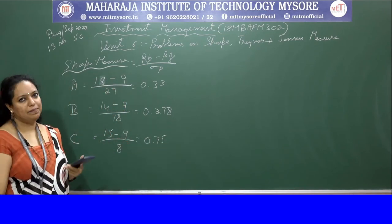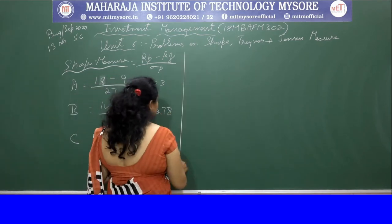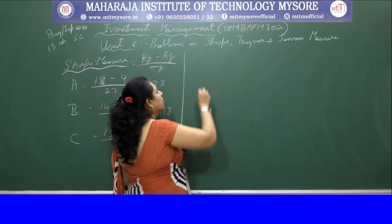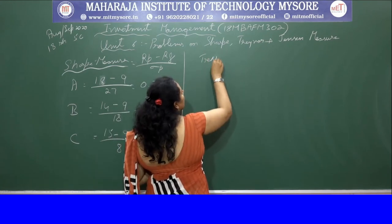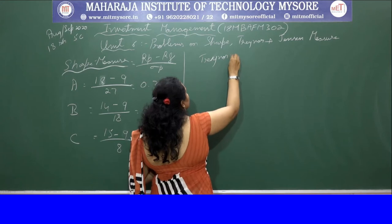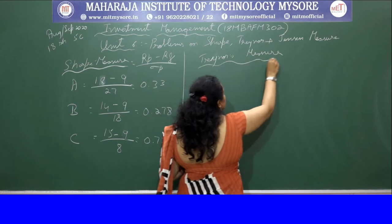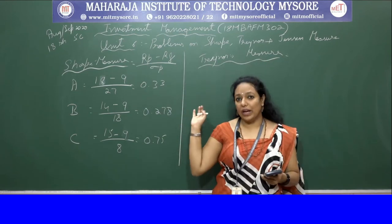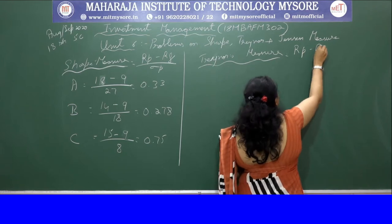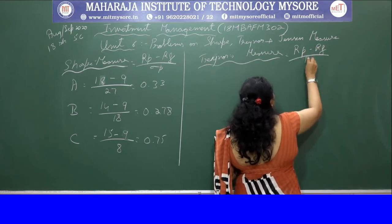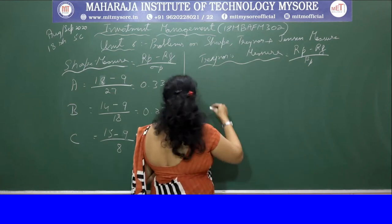So that is Sharpe's measure — very easy and a guaranteed problem. Now let us move on to Traynor's measure. The formula is quite similar: Rp minus Rf divided by beta P. Beta P is the only change.